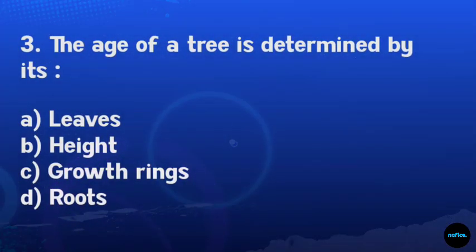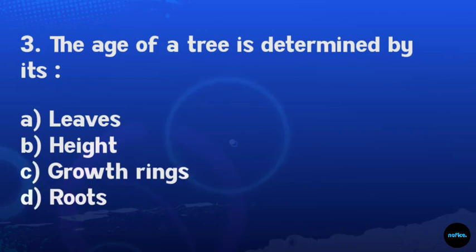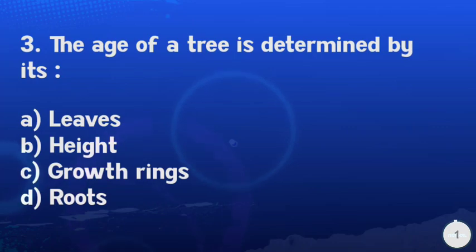The age of a tree is determined by its... Option A: Leaves. Option B: Bark and rings. Option C: Growth rings. Option D: Roots. The answer is C: Growth rings.